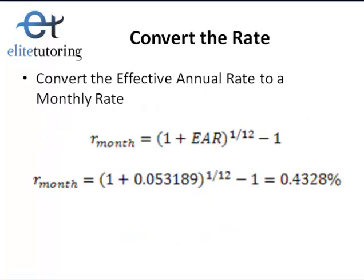Now we have the second part of converting our rate. We have the effective annual rate and we need it to be a monthly rate. The formula for a monthly rate equals 1 plus the effective annual rate, all to the power of 1 divided by 12 — the 12 comes from the fact that it's a monthly rate — and then minus 1. Inputting our effective annual rate as a decimal and converting back to a percentage, we get 0.4328% per month.